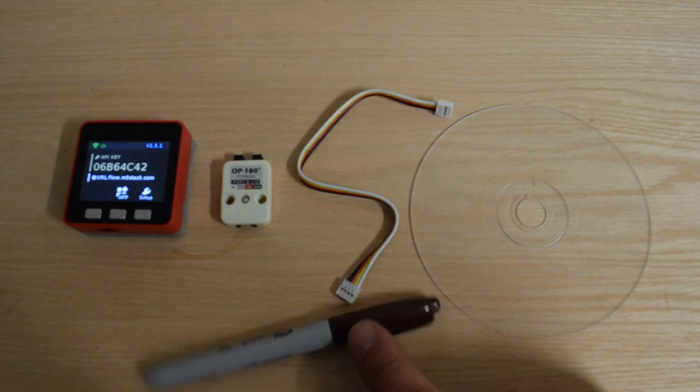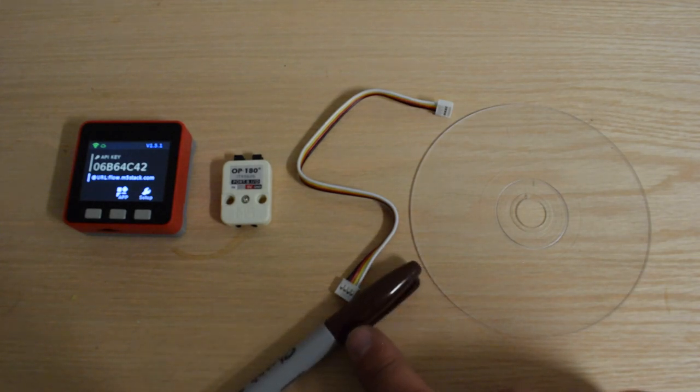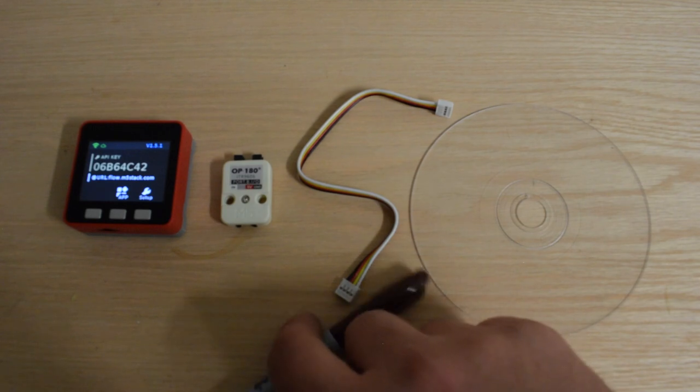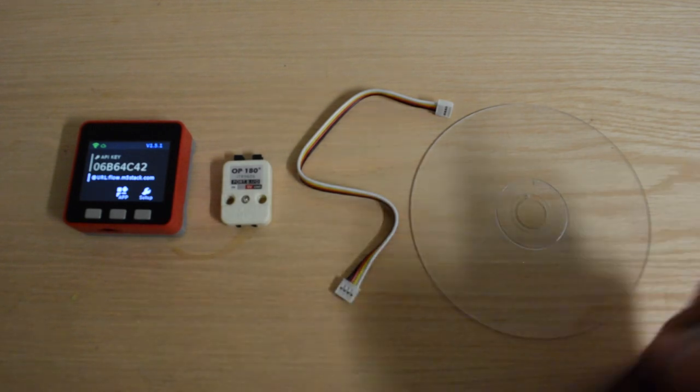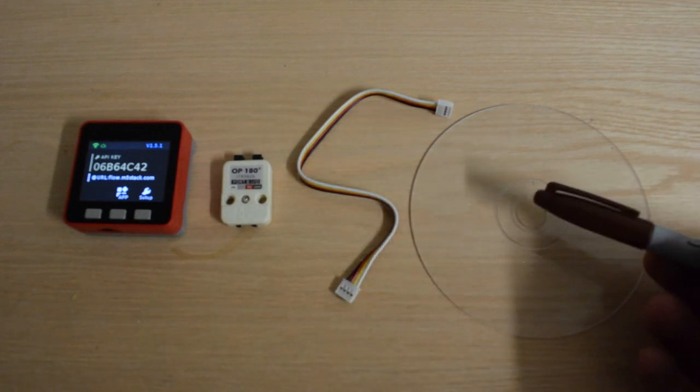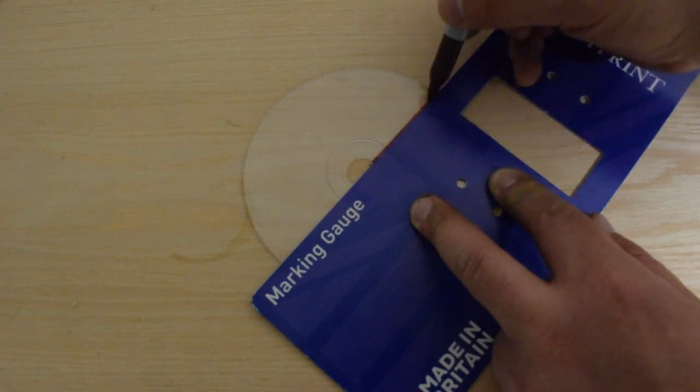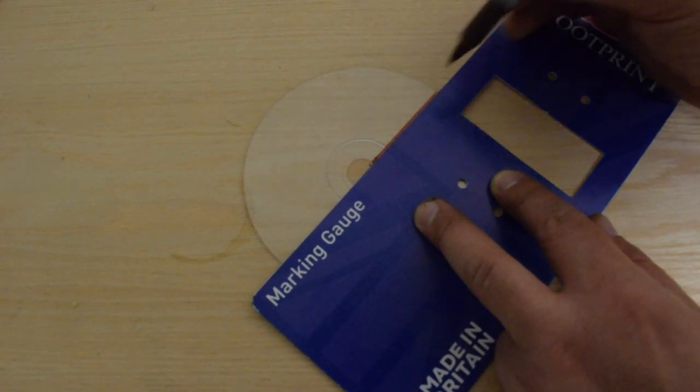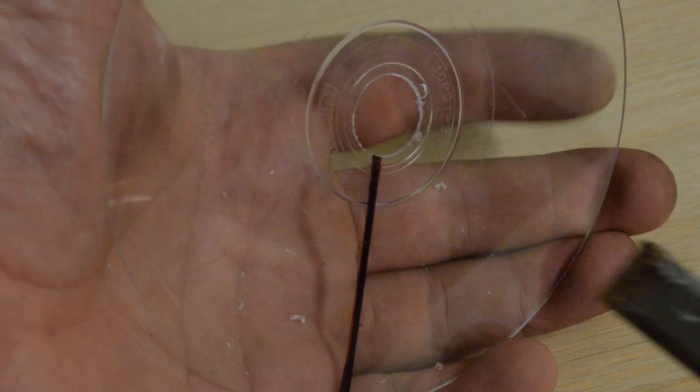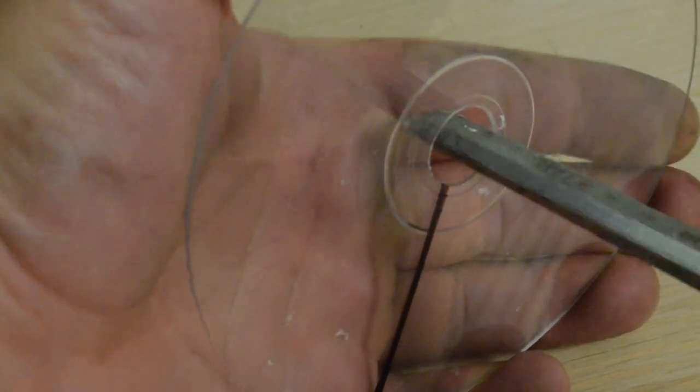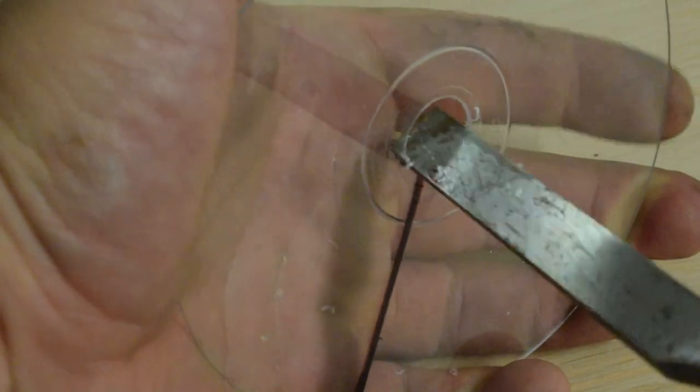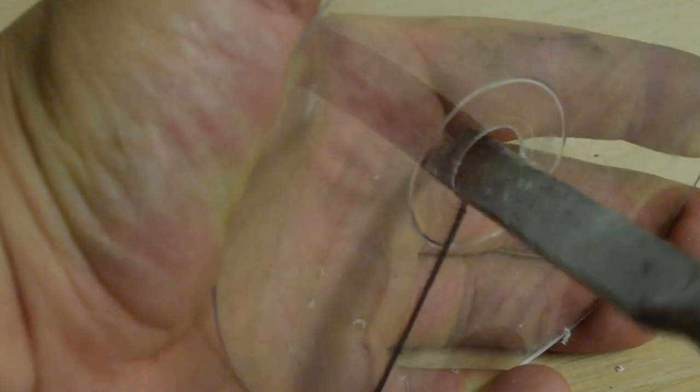I will also need a sharpie or permanent marker to make a mark on the disc. Or you could also use tape as I showed in the previous example. Use a ruler to make a straight line or to position your tape. You may also need to make the hole at the center of your disc bigger so that it can fit onto the wheel. Be careful not to break your disc when doing so.